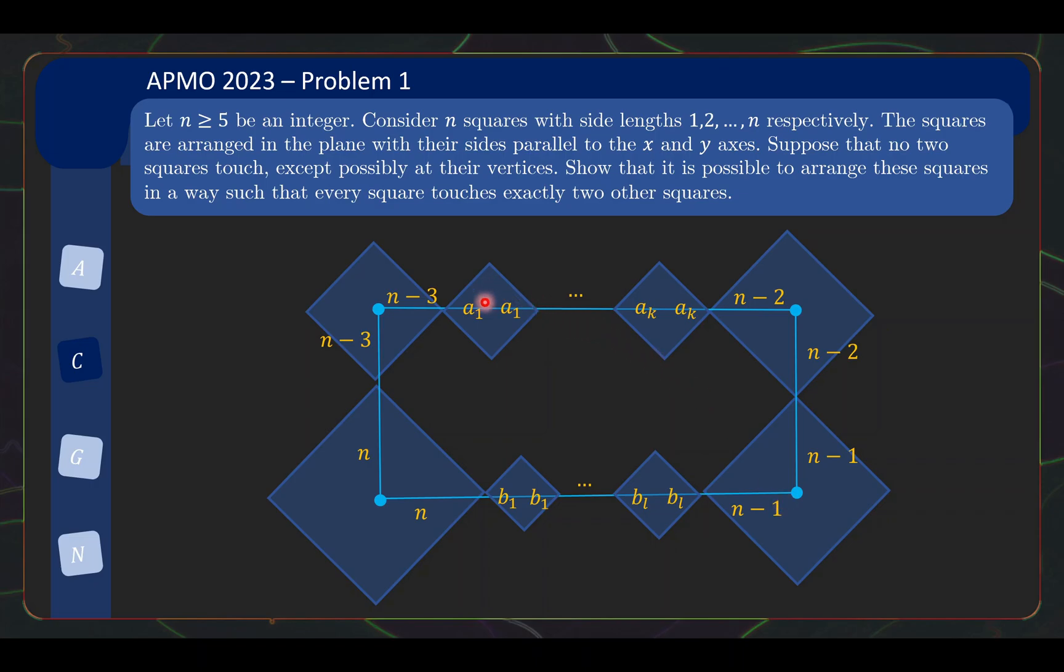Let's introduce some notation. Say the sizes of the squares here are a1 to ak and then below is b1 to bl. Then the sum of the half diagonal and diagonal is basically n minus 3, n minus 2 as well as twice of the ai. Same for the bottom is n, n minus 1 and twice of the bi's. So in order for the two to add up equal, well, the n and n minus 1 is 4 larger than n minus 3 plus n minus 2. So you need sum of ai to be 2 larger than sum of bi.